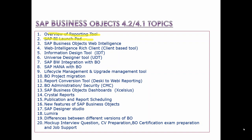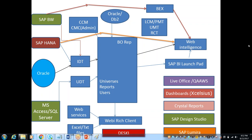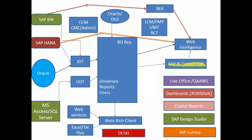Looking at the BO components-wise architecture for version 4.2 — these are the different components related to each other. The BI Launchpad is the BO portal where all users access reports. Once they log into the BI Launchpad, this portal communicates with the Business Objects server, where all the reports already implemented are saved in folders on the server, and end users can access those reports.